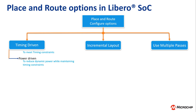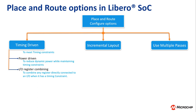This is accomplished by placing global buffers and row global buffers on one side of the chip to reduce power in the clock distribution network. The second option is I/O register combining. This helps to combine any register directly connected to I/O when it has a timing constraint. I/O register combining is not applicable on each I/O — there are a set of rules. Please refer to Libero Help for more information.